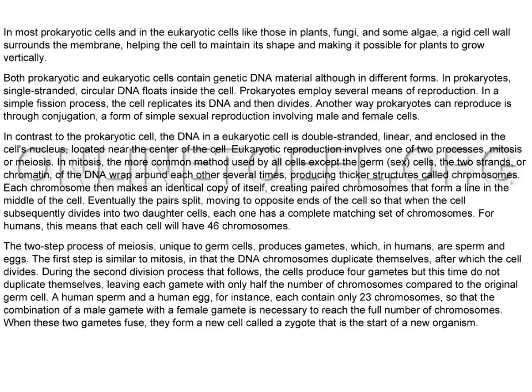Eukaryotic reproduction involves one of two processes: mitosis or meiosis. In mitosis, the more common method used by all cells except the germ sex cells, the two strands, or chromatin, of the DNA wrap around each other several times, producing thicker structures called chromosomes. Each chromosome then makes an identical copy of itself, creating paired chromosomes that form a line in the middle of the cell. Eventually, the pairs split, moving to opposite ends of the cell so that when the cell divides into two daughter cells, each one has a complete matching set of chromosomes. For humans, this means that each cell will have 46 chromosomes.